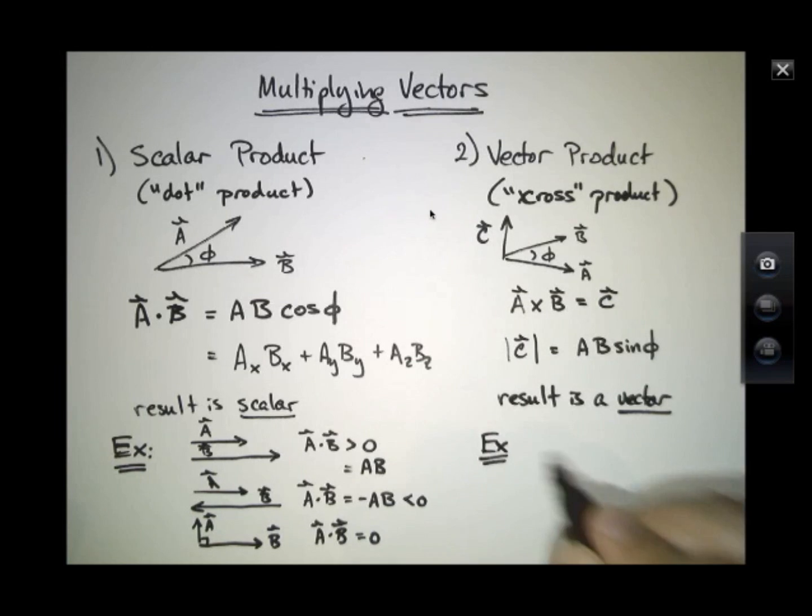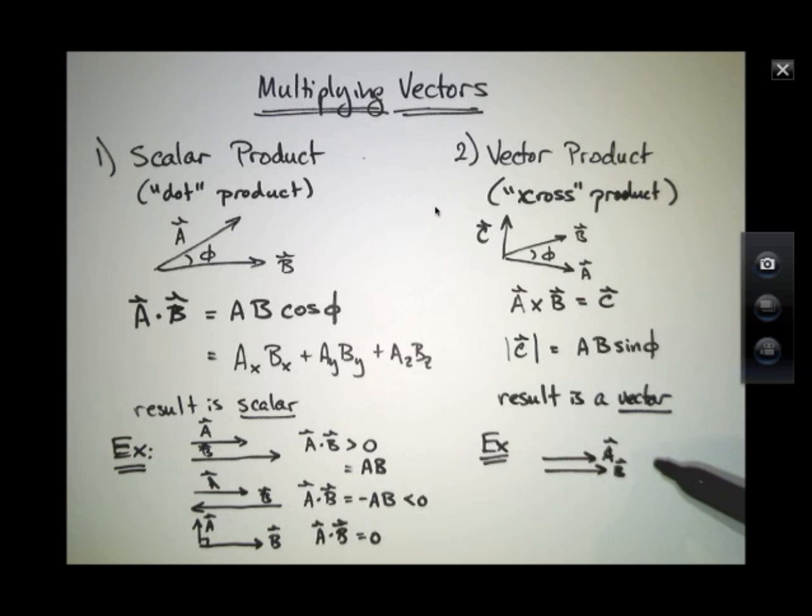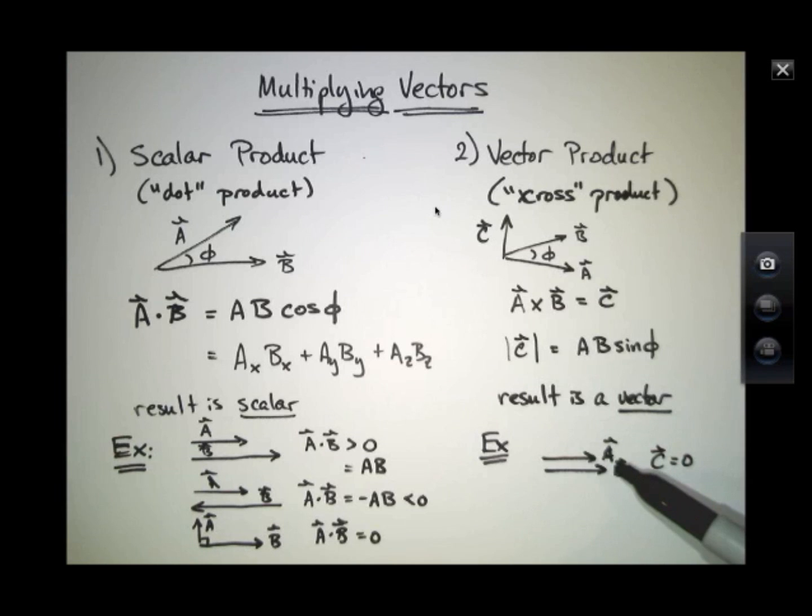So this produces a result which is a vector. And just to think through some of these examples again, in this case I've just drawn, the vector product is actually zero because the angle between these two vectors A and B is zero degrees and therefore the sine of the angle between them is zero. So the cross product again is a measure of how perpendicular the two vectors are and these are not very perpendicular vectors.